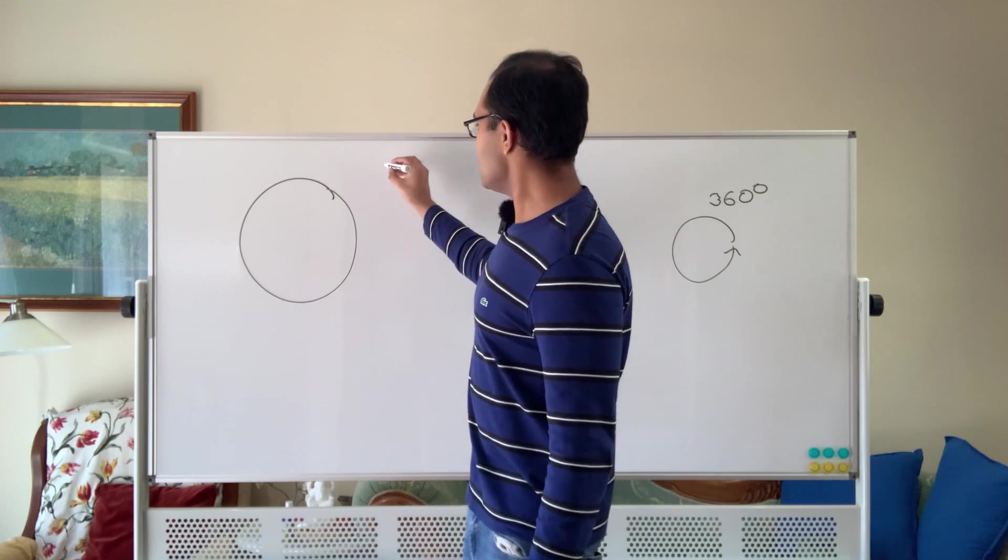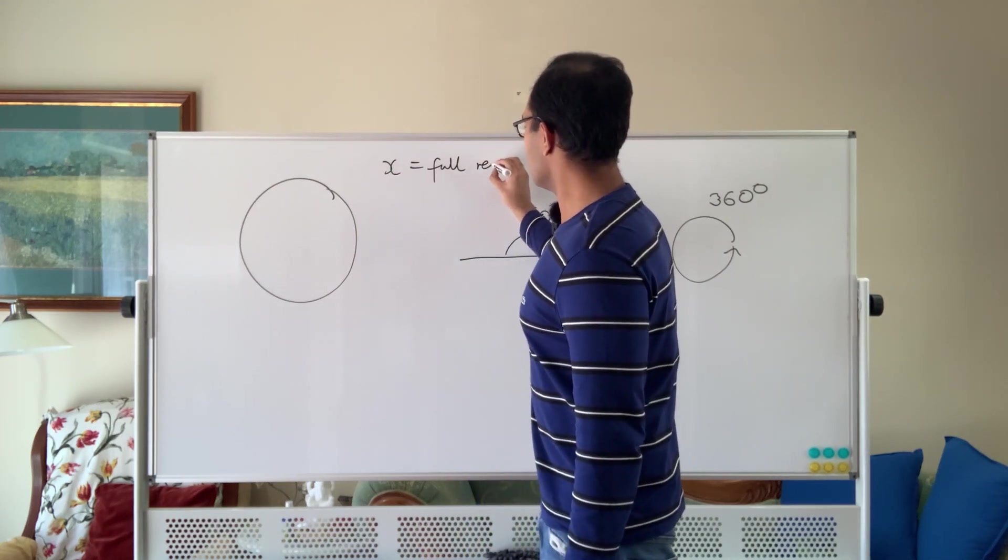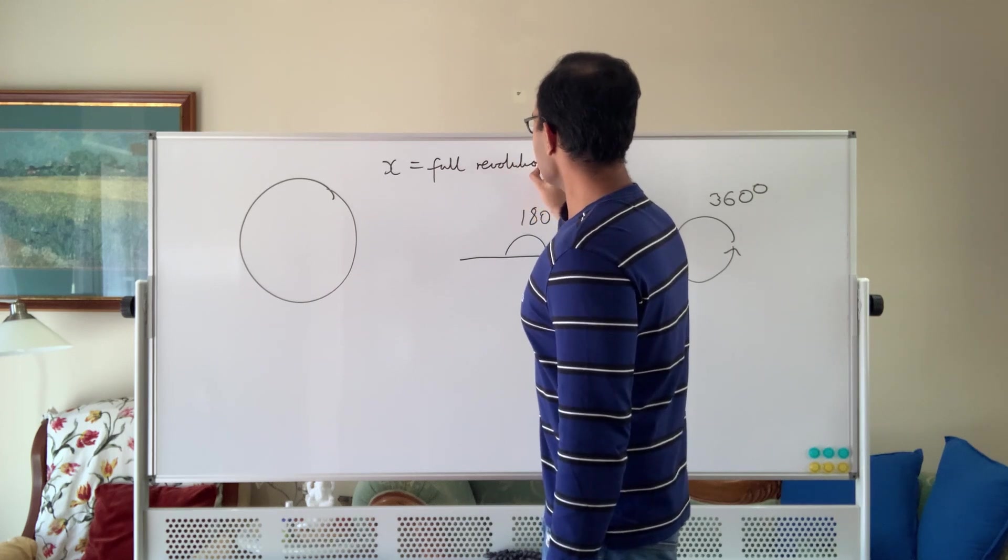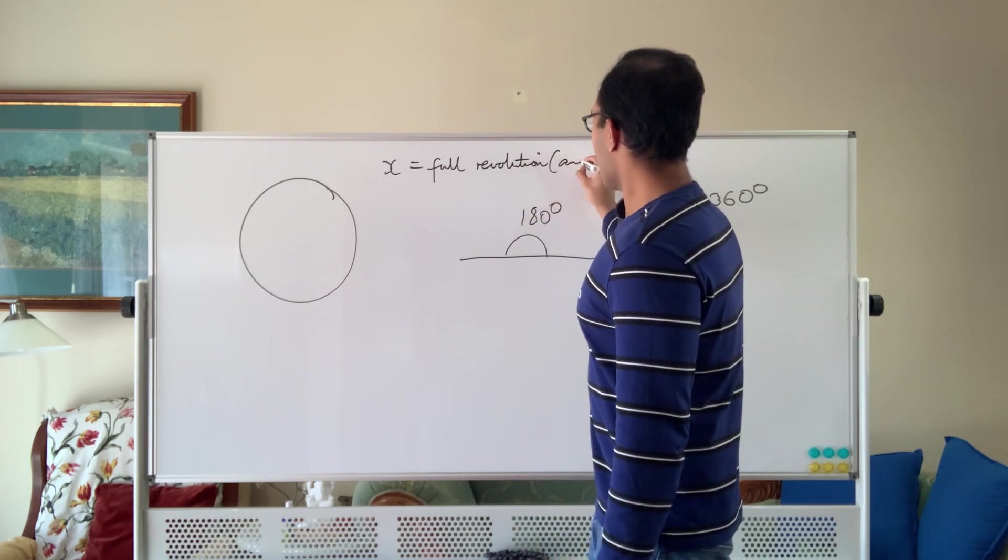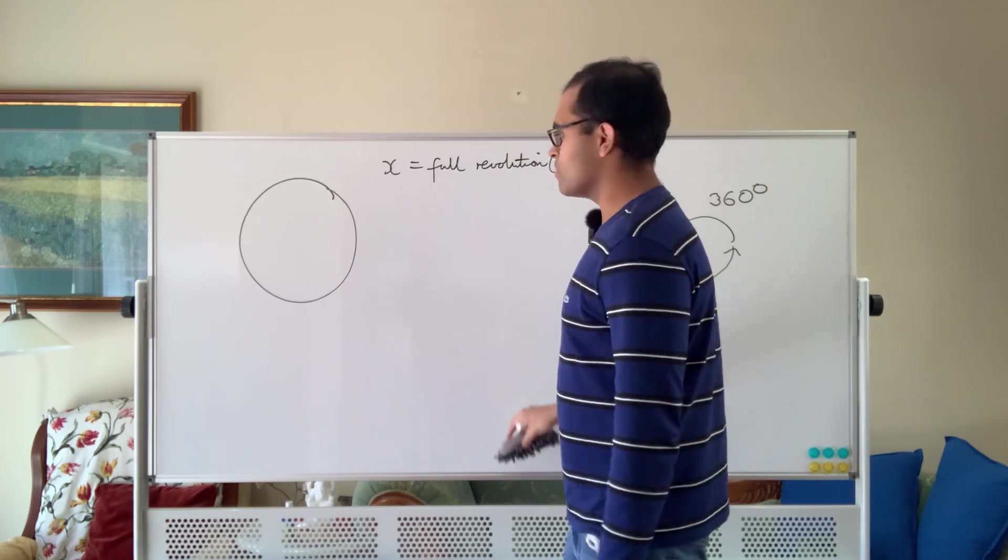So what we want is if we divide the circle into two pieces, that number should be divisible by two. So whatever number we consider, let's say x for a full revolution, whatever that number x is, we want it to be divisible by two because we want to be able to divide a circle into two and call it something nice.